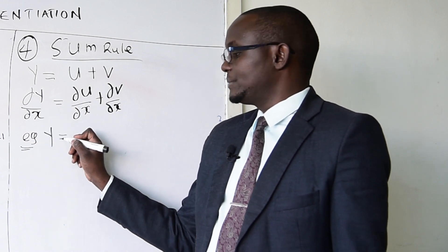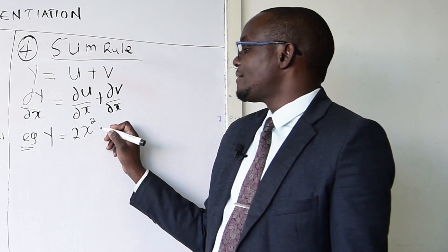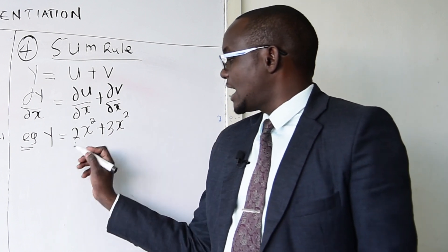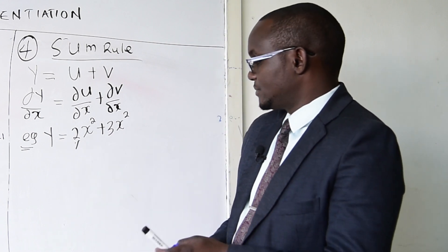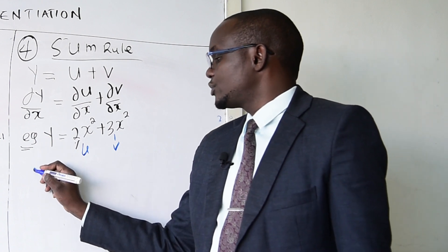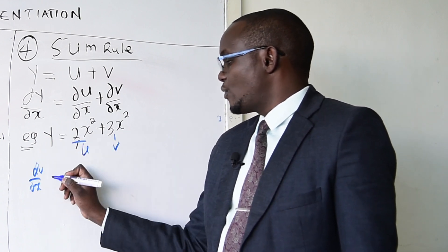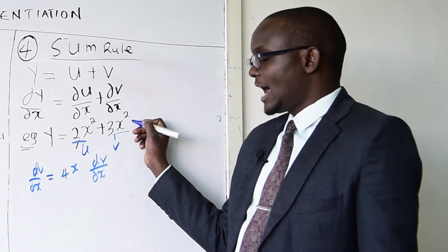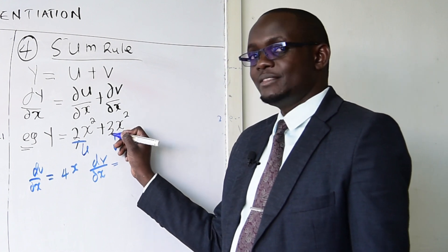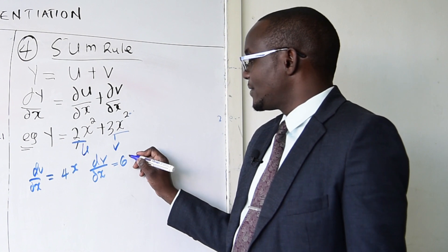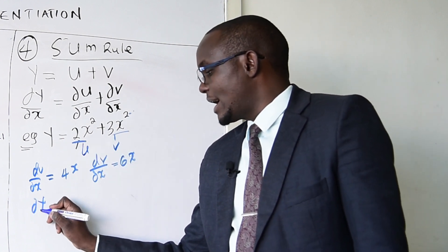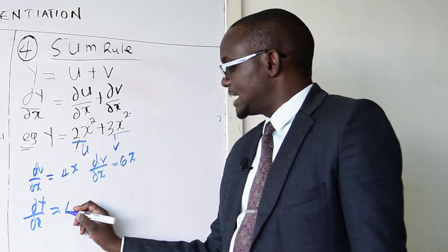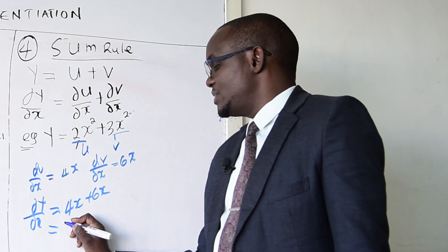Example: y equals 2x^2 plus 3x^2. Here u is 2x^2 and v is 3x^2. To get du/dx, differentiate 2x^2 to get 4x. To get dv/dx, differentiate 3x^2: multiply 2 by 3 to get 6, with power 2 minus 1, giving 6x. Then dy/dx equals du/dx plus dv/dx, which is 4x plus 6x, giving 10x.